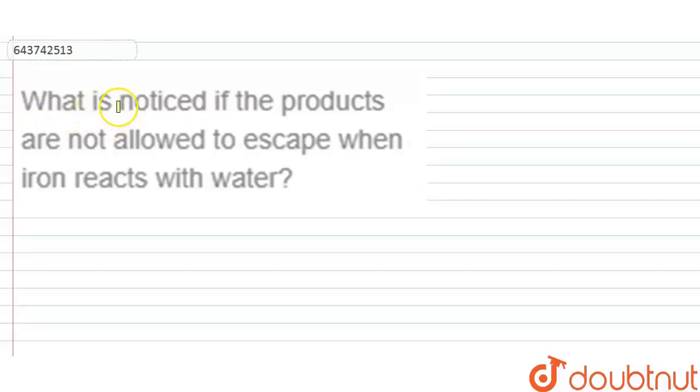The question says: what is noticed if the products are not allowed to escape when iron reacts with water? So we have been given a reaction that iron reacts with water. For this reaction, if the products are not allowed to escape, what will happen? What will be noticed?